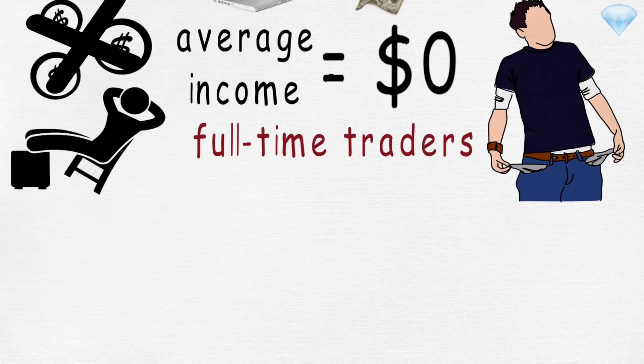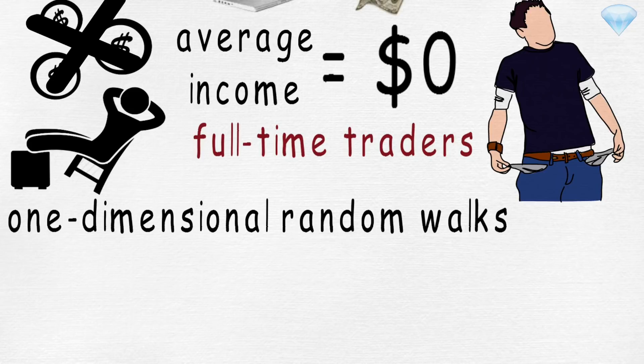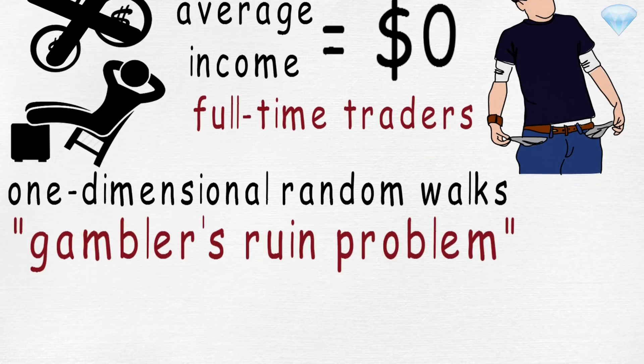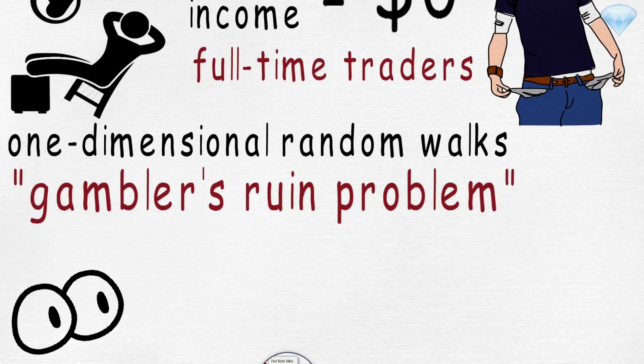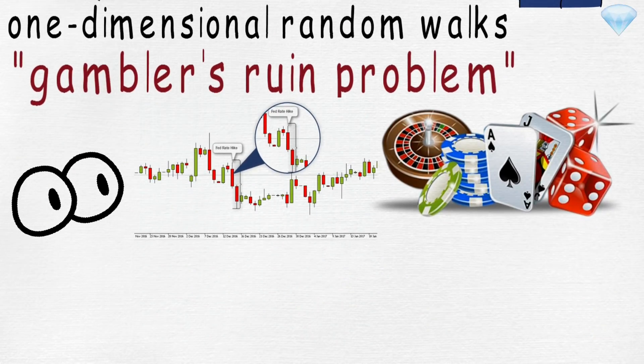Today, we are going to talk about one-dimensional random walk. In particular, we are going to cover classic phenomena known as gambler's ruin problem. The gambler's ruin problem will open your eyes on day trading and gambling. I warn you, this is when it gets technical and some math will be involved.